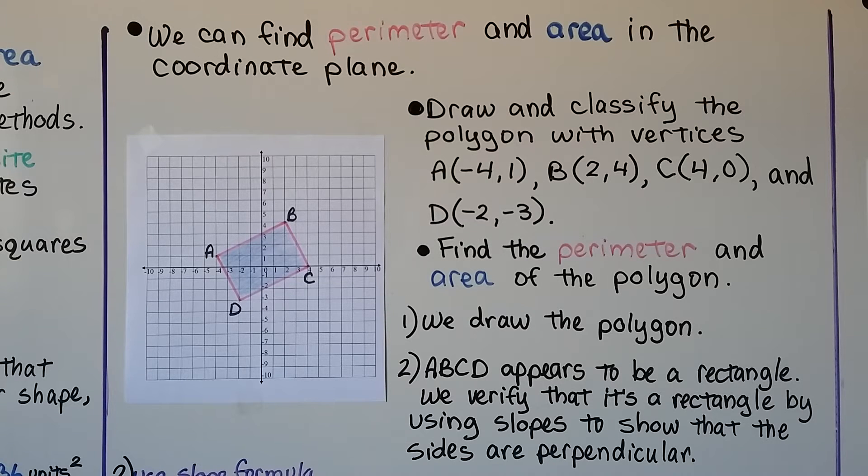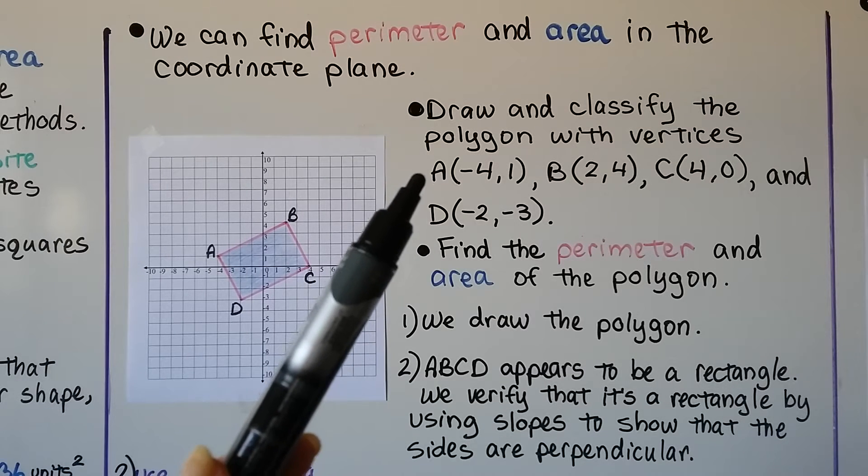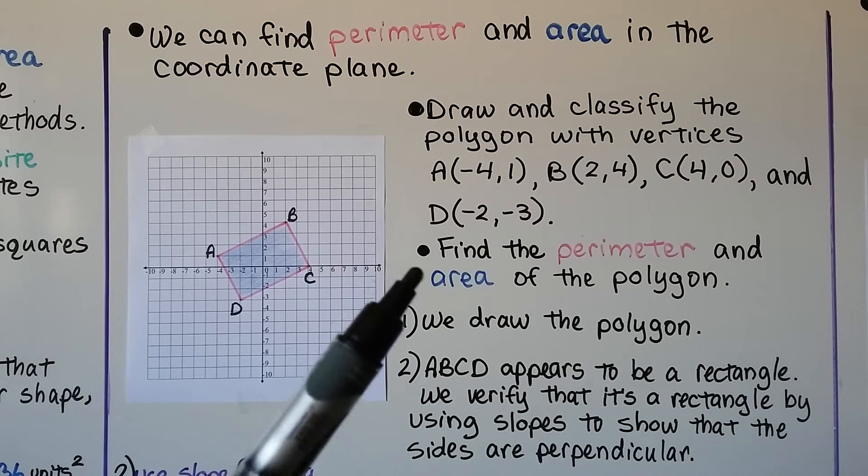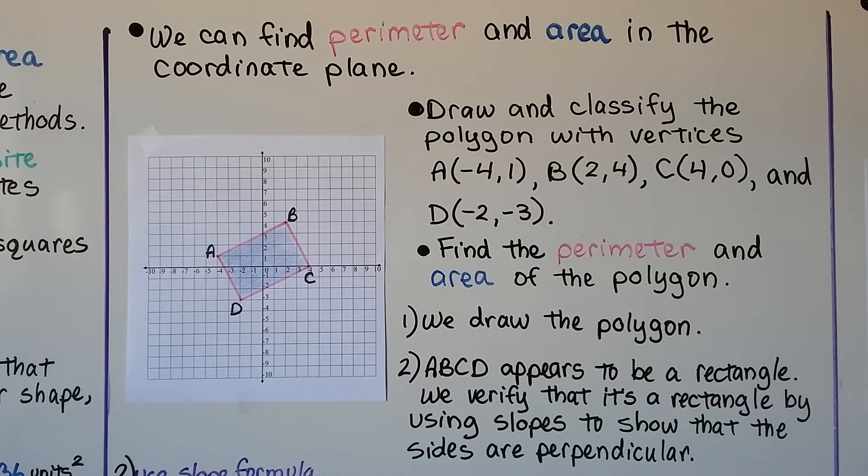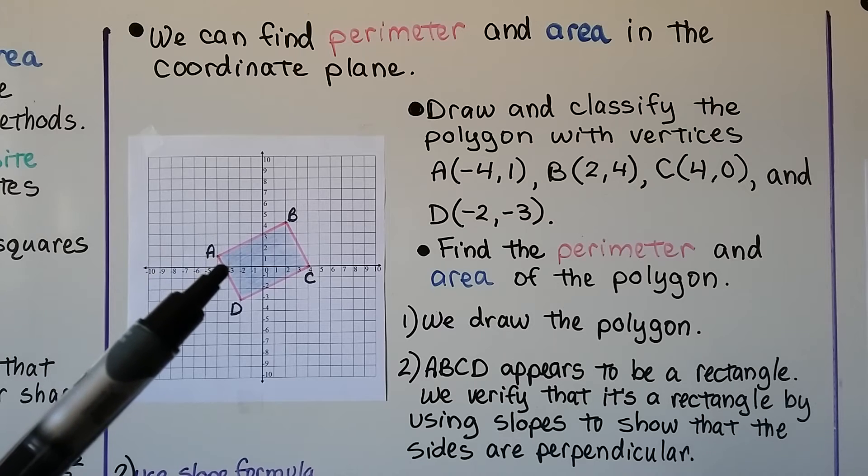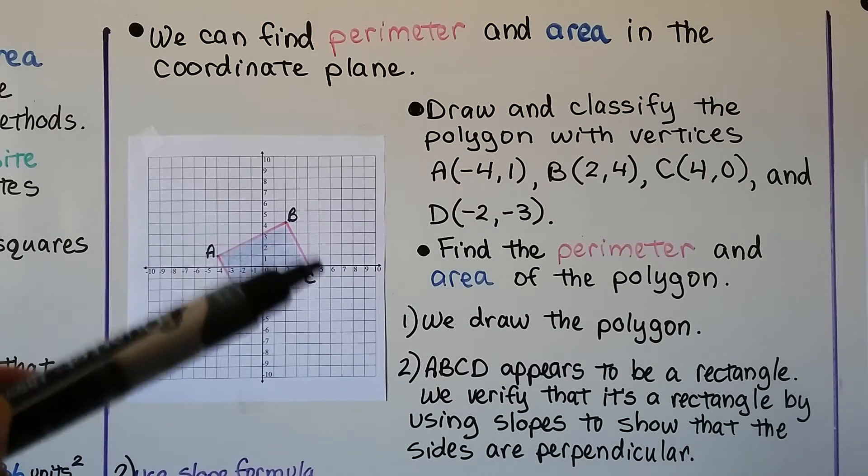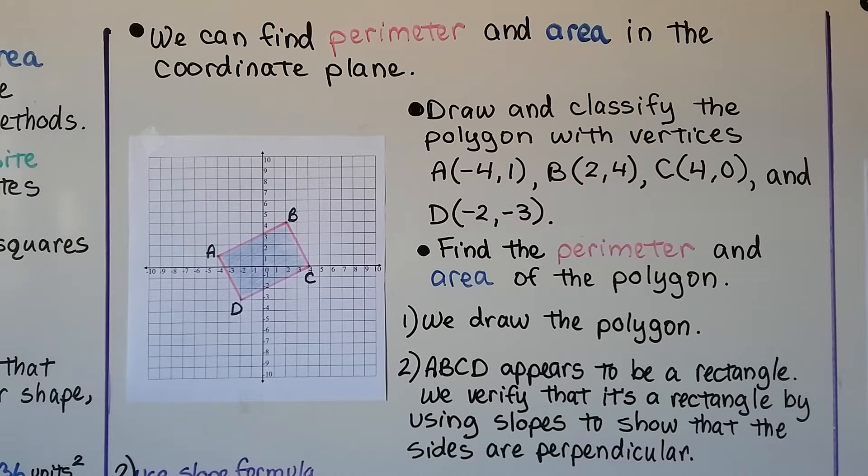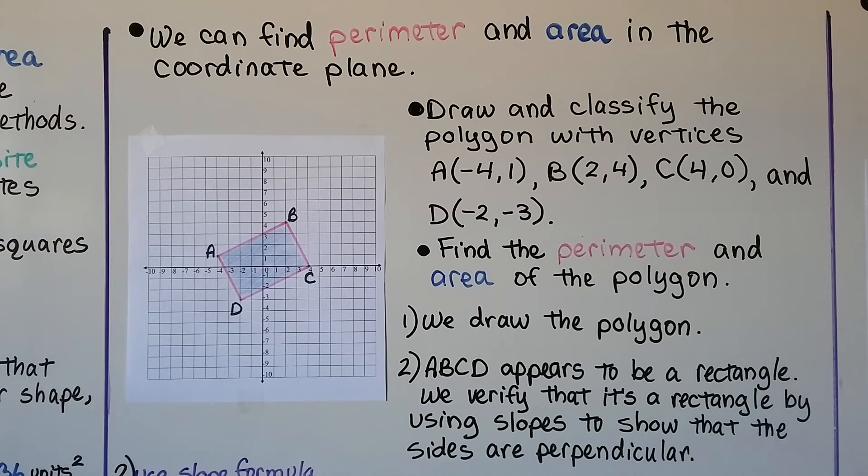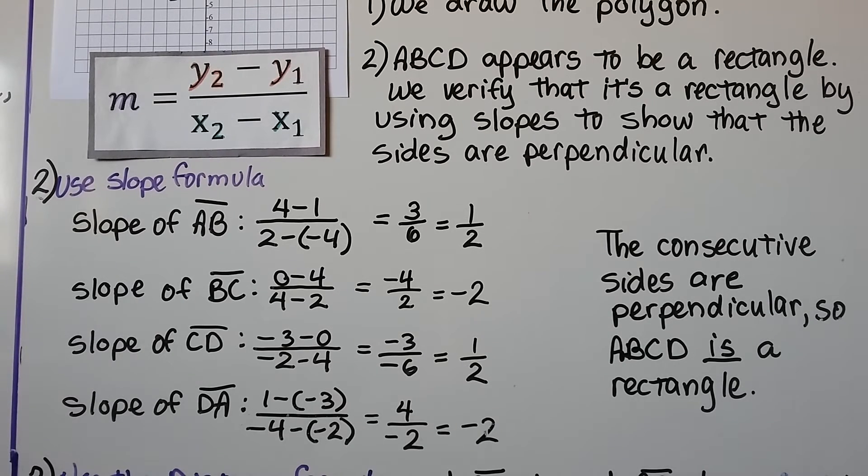We can find perimeter and area in the coordinate plane. It tells us to draw and classify the polygon with these vertices, a, b, c, and d. And we need to find the perimeter and area of the polygon. So the first thing we do is we draw the polygon. We plot these points. We connect the vertices to make this polygon. And a, b, c, d appears to be a rectangle. We verify that it's a rectangle by using slopes to show that the sides are perpendicular. If it does come out to be a rectangle, we know which formula to use. So to show that the sides are perpendicular, we're going to use the slope formula and our ordered pairs.